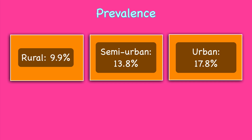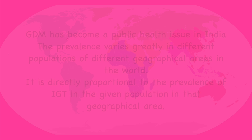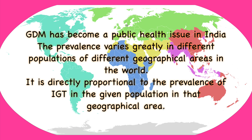The prevalence of GDM in rural India is about 9.9%. In semi-urban India, it is 13.8%, whereas in urban areas it is as high as 17.8%. This shows that GDM is more prevalent in urban areas than in rural areas. The average prevalence of GDM in India is 13.9%, making it a public health issue. The prevalence varies greatly in different populations across geographical areas and is directly proportional to the prevalence of impaired glucose tolerance in that population.